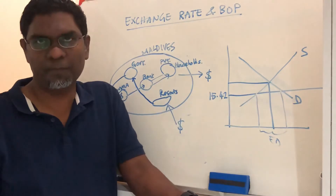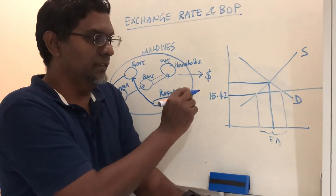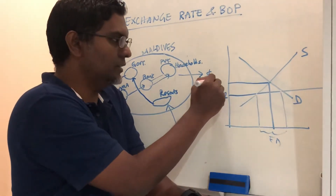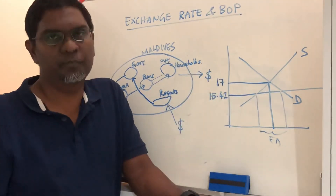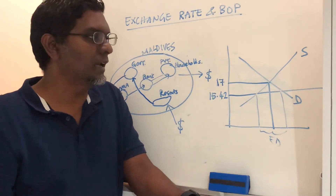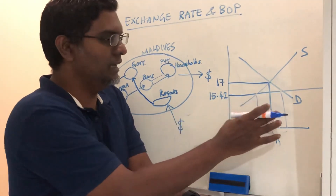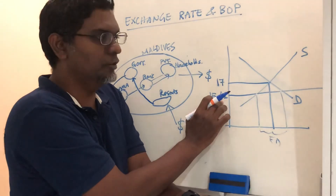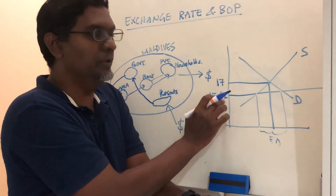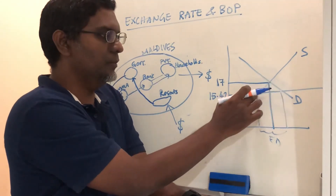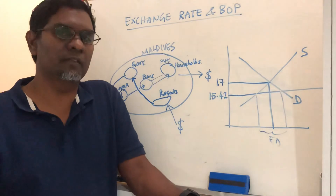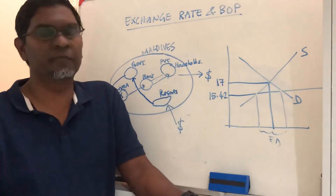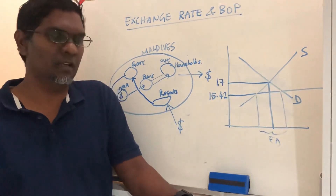We know that the exchange rate is fixed by the central bank — the MMA — at 15.42. If this fixed exchange rate of 15.42 is below the market rate, for instance if the market rate would be 17 per dollar, then there will be an excess demand. The demand will be more than the supply, and some people might not be able to get hold of US dollars at the fixed rate of 15.42.